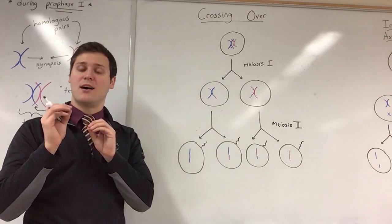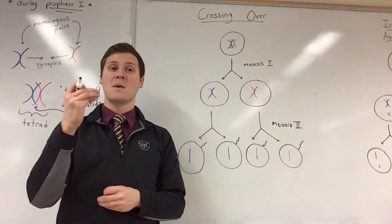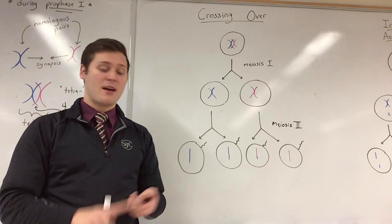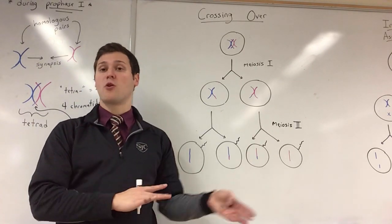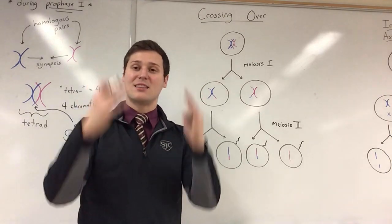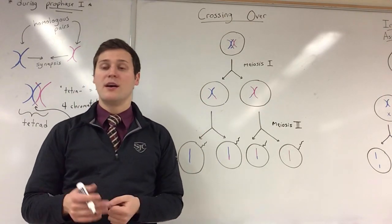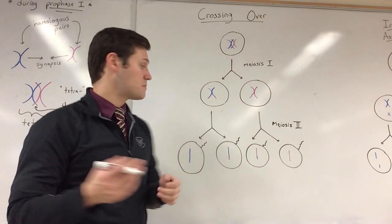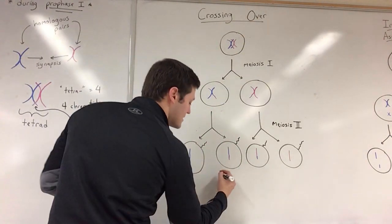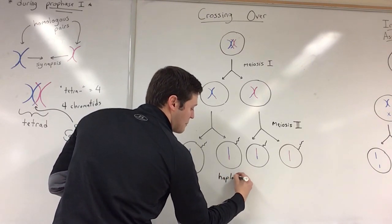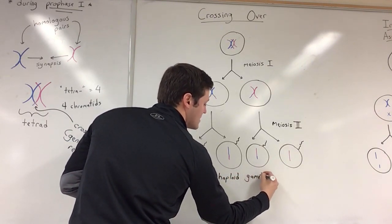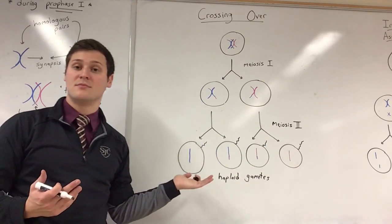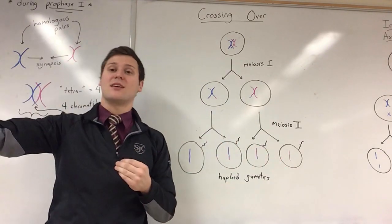Looking at the results, we have a chromosome that's entirely paternal, one that's mostly paternal with a little maternal, one that's mostly maternal with a piece of paternal, and one that's fully maternal — all in the gametes. For males, meiosis begins in the testes after puberty. For females, meiosis occurs before birth, so they're born with all the eggs they'll ever have, which begin maturing one by one at puberty. In this situation we have four genetically distinct haploid gametes, showing how crossing over leads to genetic variation.